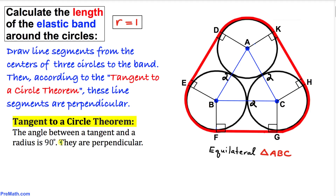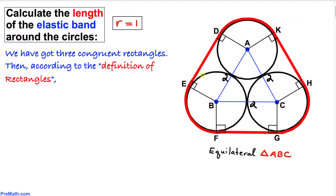The tangent-to-a-circle theorem states that the angle between a tangent and a radius is always 90 degrees. Therefore the angle between each radius and the tangent is 90 degrees, and likewise all of these angles are 90 degrees. This gives us three congruent rectangles.